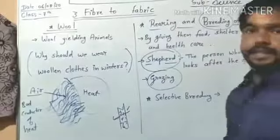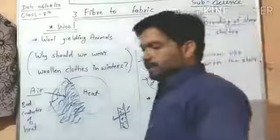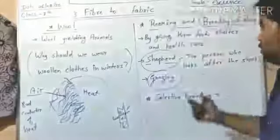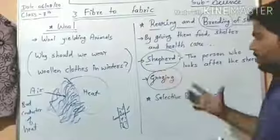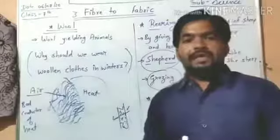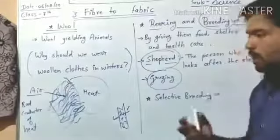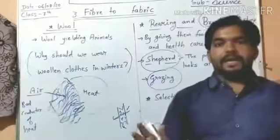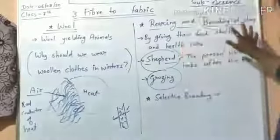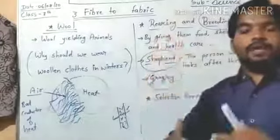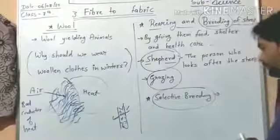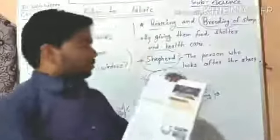Breeding means the selective process used in sheep farming to get more and better quality wool. The shepherd or farmer selects good quality sheep as parents and by mating them they reproduce new offspring. Sheep that provide good quality wool are selected and their breed is continued. This is called selective breeding.